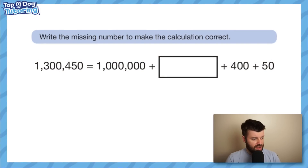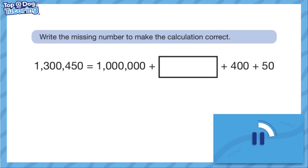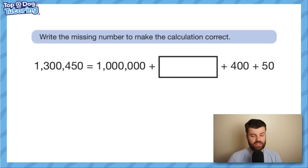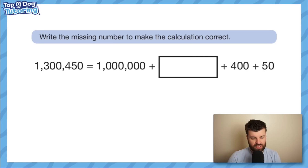I want you to try this question yourself first. How did you do it? Get an answer as quickly as possible. This one is probably the most obvious one where most people would answer this question the quick way. Basically, we don't need to do any addition or subtraction or anything like that — I can put the answer straight away in as 300,000.